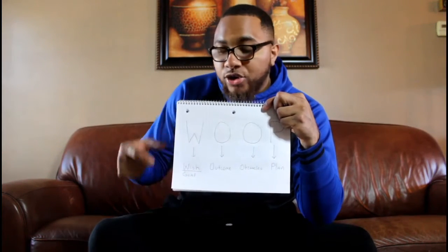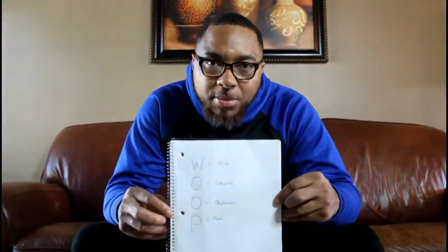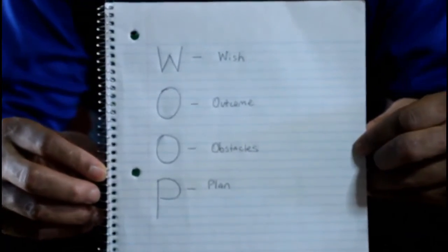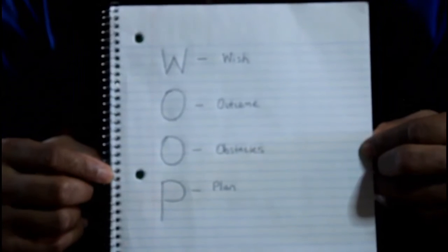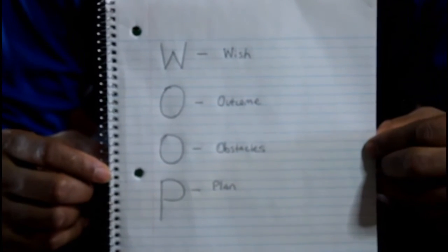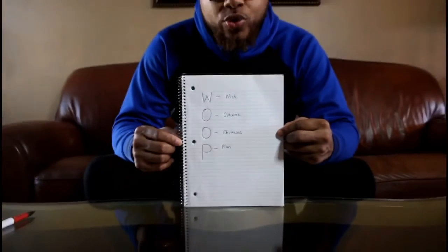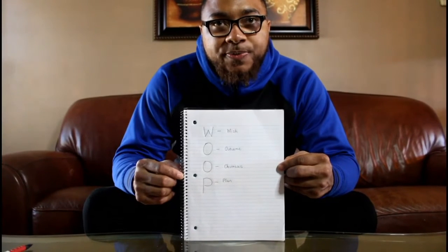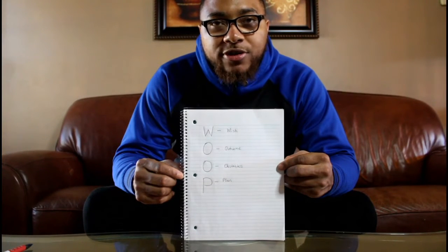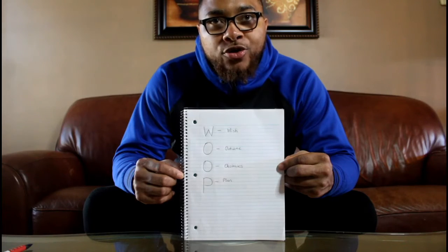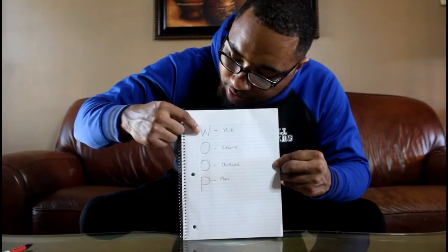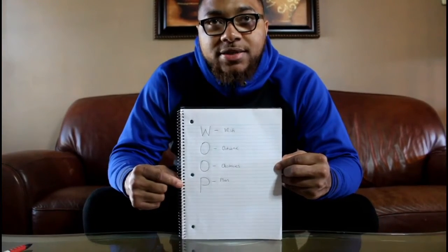Get a piece of paper and write W-O-O-P. Make a wish — set a goal. What is your goal for the next four weeks? What do you want to accomplish within the next four weeks? Take a minute to do that. Pause the video if you need to think about what goal you want to set, and write it down next to the W.